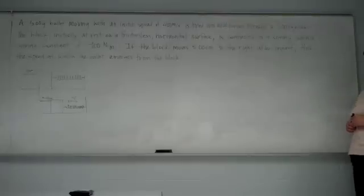We have a 5 gram bullet moving with an initial speed of 400 meters per second. It's fired and passes through a 1 kilogram block. So it hits the block, passes through the block, and continues on its way. The block is initially at rest on a frictionless horizontal surface. The box is connected to a spring. The spring has a spring constant of 900 newtons per meter. After the bullet has hit the block and passed through, the block moves 5 centimeters to the right. Find the speed at which the bullet emerges from the block.